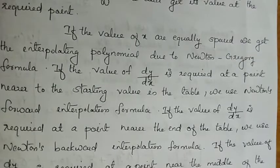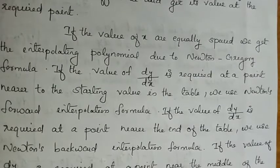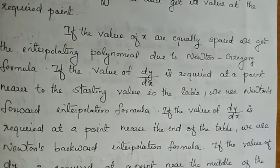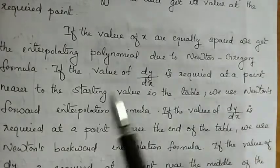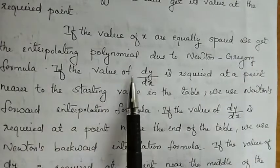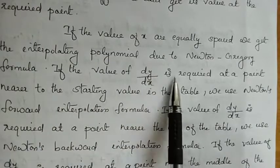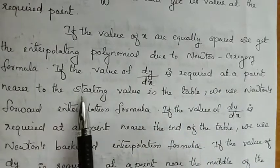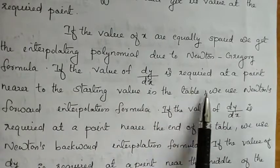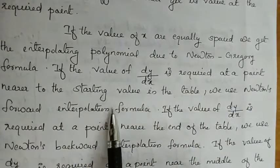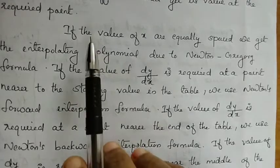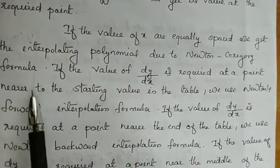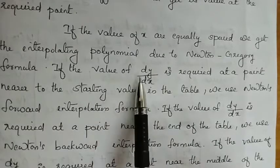If the values of x are equally spaced, we get the interpolating polynomial due to the Newton-Gregory formula. If the value of dy/dx is required at a point nearer to the starting value in the table, we use Newton's forward interpolation formula, where x-values are equally spaced.